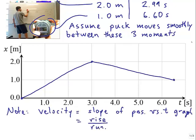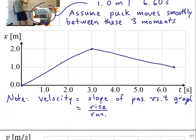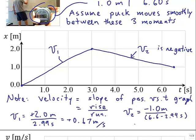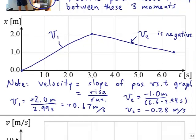So if we look at the first fast motion to the right, that's v1. It's going to be plus 2 meters divided by 2.99 seconds. On my calculator, I got plus 0.67 meters per second. v2 is going to be negative and less slopey. So it's negative 1.0 divided by 6.6 minus 2.99 seconds. On my calculator, I got negative 0.28 meters per second.